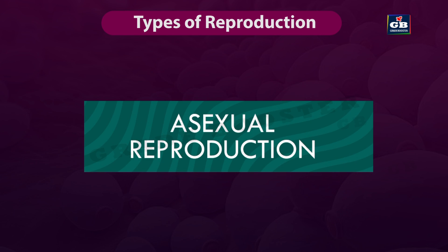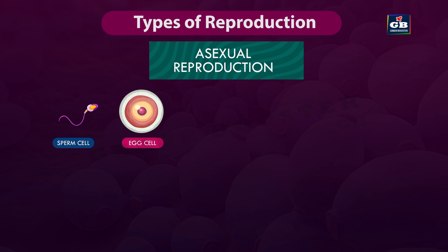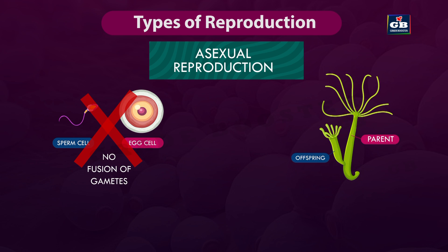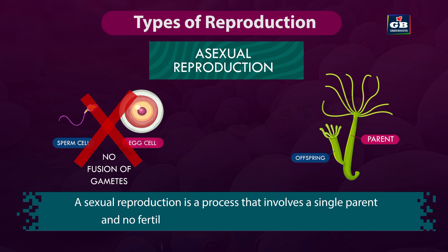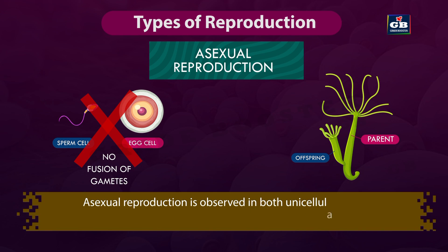Let us learn about asexual reproduction. Asexual reproduction means the reproduction that takes place without the fusion of sex cells or gametes. Only one parent is involved in this type of reproduction. Asexual reproduction is a process that involves a single parent and no fertilization or gamete formation takes place. It is observed in both unicellular and multicellular organisms.